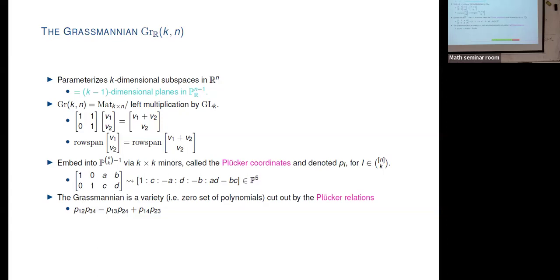For example, if we have a two-dimensional subspace of R^4, that's a 2-by-4 matrix. Most of the time we can row-reduce it and express it in a standard form, and then we write down its 2-by-2 minors. The first one is 1, then c from columns 1 and 3, then minus a from columns 2 and 3, d from columns 1 and 4, minus b from columns 2 and 4, and finally ad minus bc from columns 3 and 4.